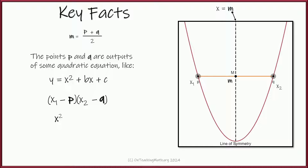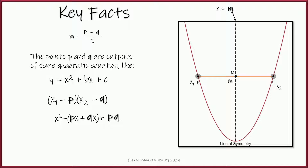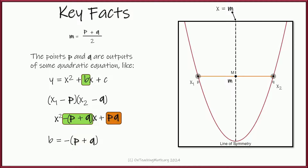Let's multiply those factors together: x times x is x squared. On the outside you get negative q times x, on the inside negative p times x, and the last terms give negative p times negative q which is plus pq. Putting it in order and factoring out a negative, we get x squared minus the quantity p plus q times x, plus pq. Relating this to x squared plus bx plus c, we can see that b equals negative the quantity p plus q, and c equals p times q.